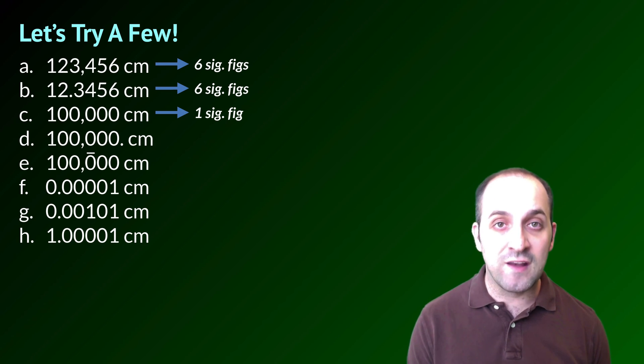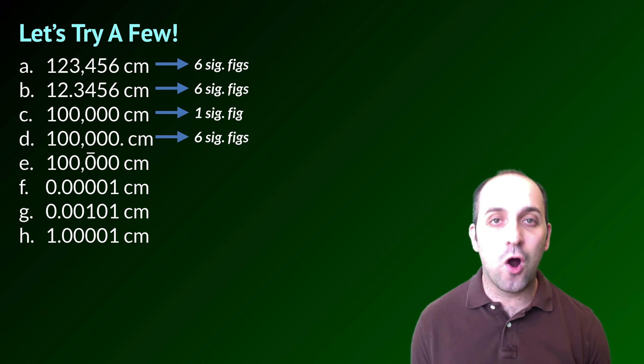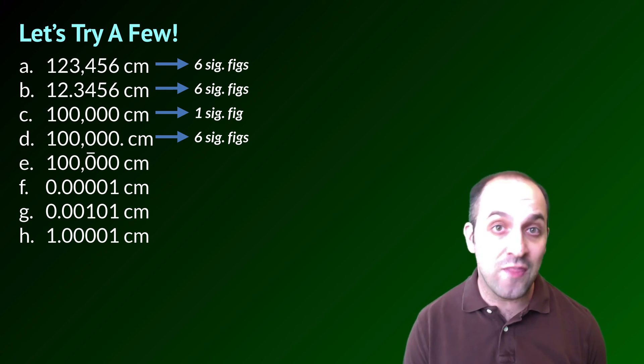If we did know those zeros with significance, we could do one of two things. If we knew that they were all significant, we could simply put a decimal point after that last zero. That's a signal that all of the zeros in this measurement are in fact known with certainty. That's why the decimal is there.